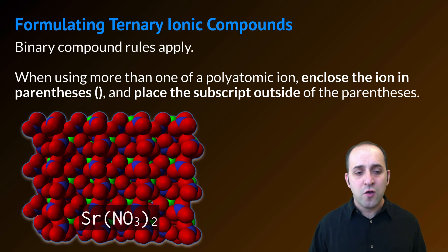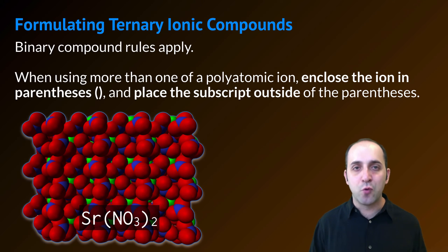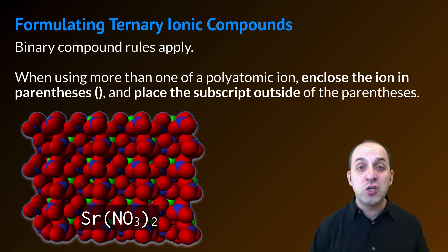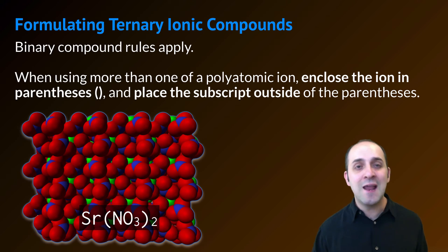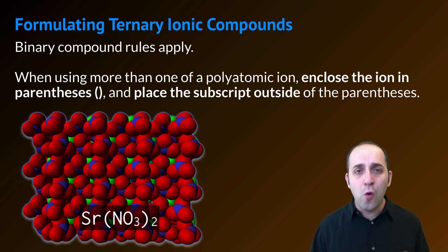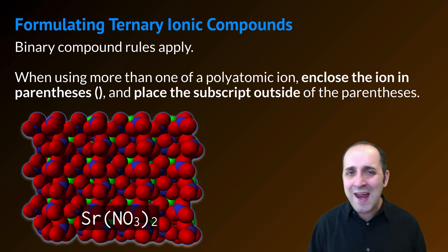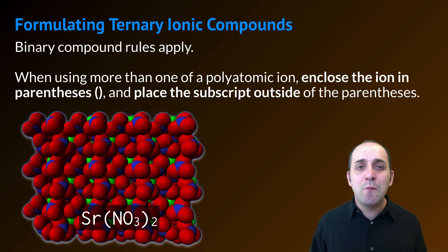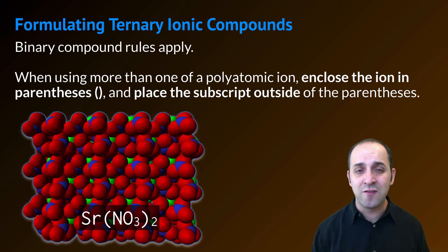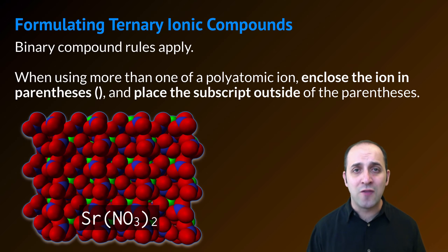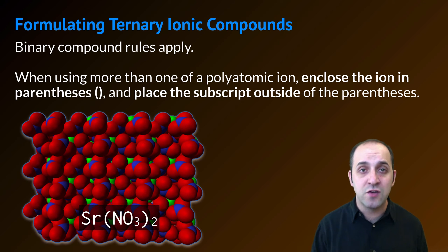We do this to avoid confusion. So for strontium nitrate, you can see that we have the nitrate in parentheses and then we have a 2 outside of it to indicate that we use two nitrate ions. If we didn't have those parentheses, our formula would look like SrNO32, which wouldn't make any sense at all. Anytime we use more than one polyatomic ion, we use parentheses. Coincidentally, you don't use parentheses when you only have one polyatomic ion because there's really no need to do so.